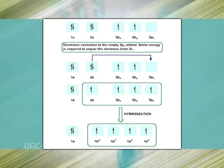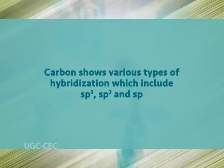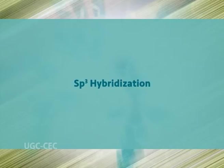In order to account for the tetravalency of carbon, it is suggested that one electron jumps from the 2s orbital to the 2pz orbital. Thus the electronic configuration of carbon in the excited state is: 1s², 2s¹, 2px¹, 2py¹, and 2pz¹. Carbon shows various types of hybridization, which include sp³, sp², and sp.